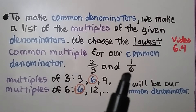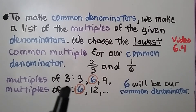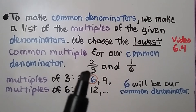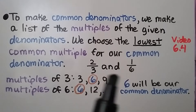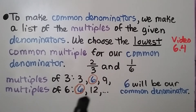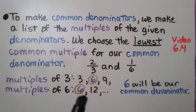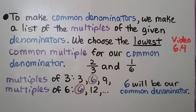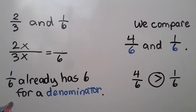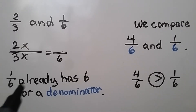We have two-thirds and one-sixth. We write the multiples of three because that's the denominator, and the multiples of six because that's the denominator. We can see they can meet at six, so six will be our common denominator. One-sixth already has a six for a denominator, so we leave it as it is.